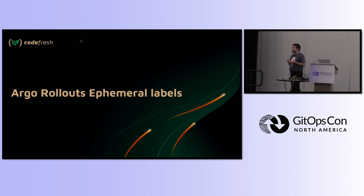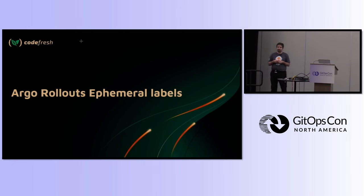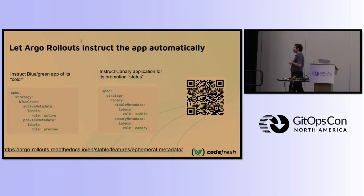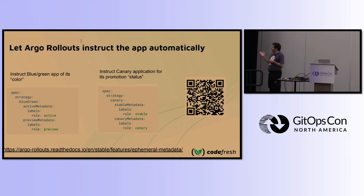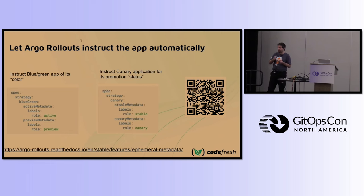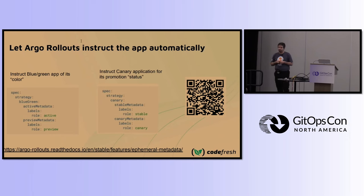We'll use these labels to make our application smarter — to explain its role while a deployment is happening. Who will create these labels? You could do it manually, but there's no need. Argo Rollouts has had this feature since around version 1.4: you can edit your deployment — for both blue-green and canary — and tell Argo Rollouts to put specific labels into the respective service during a deployment. In my example, the label I've chosen is `role`, with values `stable`, `canary`, `active`, or `preview`.